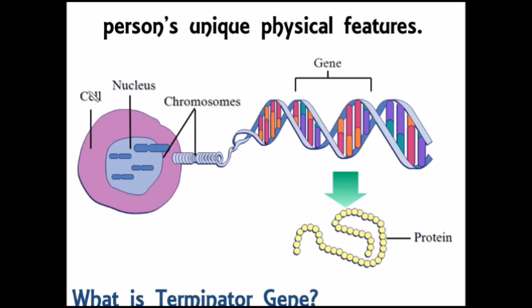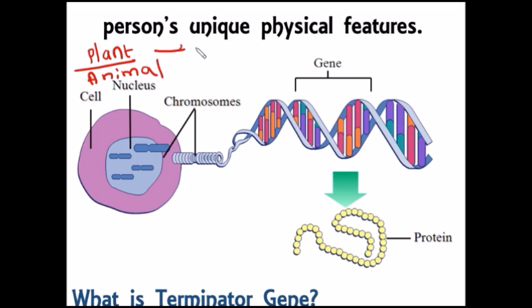Let's understand the gene chromosome distribution. If we take a plant or animal body, it is made up of many organs or compartments.